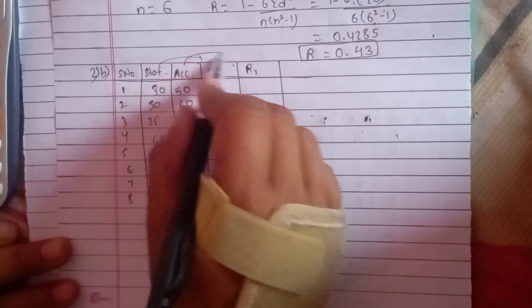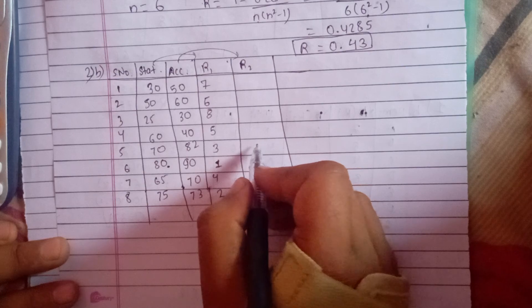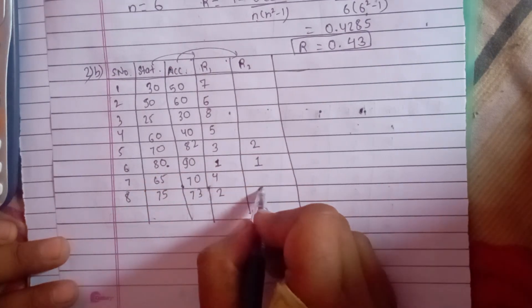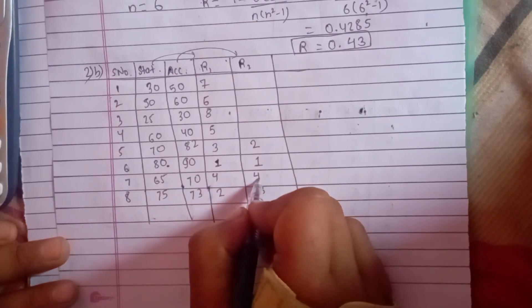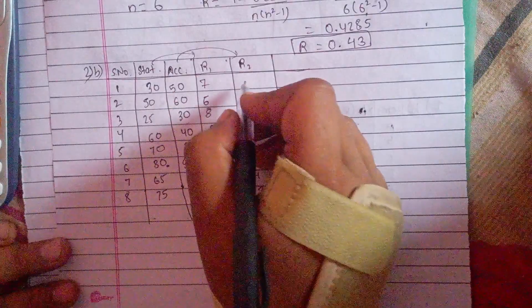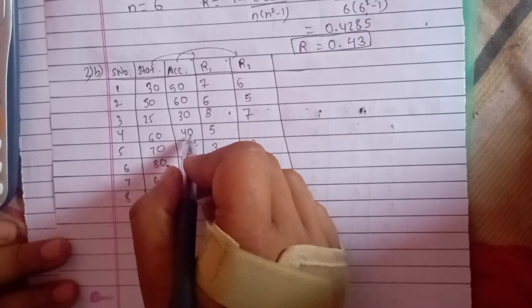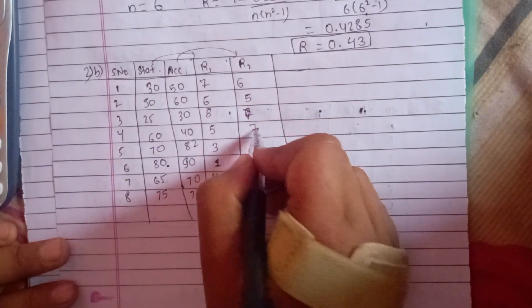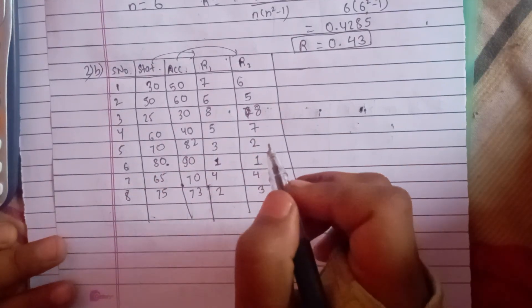Now for R2 from accountancy, count is 8. Rank 1 is 90. Rank 2 is 82. 73 is rank 3. 70 is rank 4. 60 is rank 5. 50 is rank 6. 40 is rank 7. 30 is rank 8.